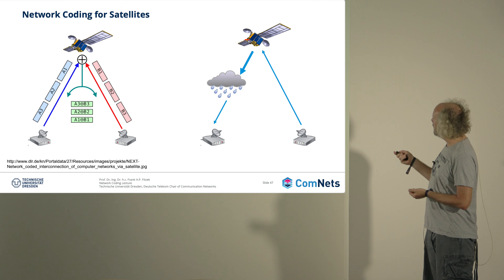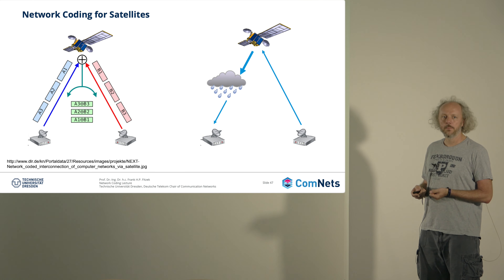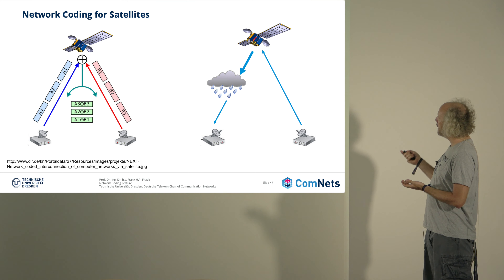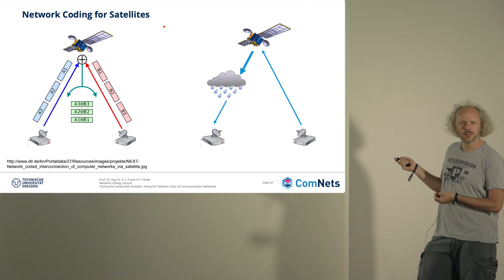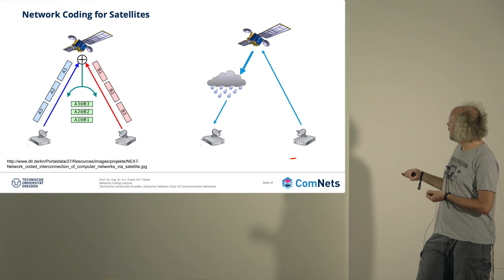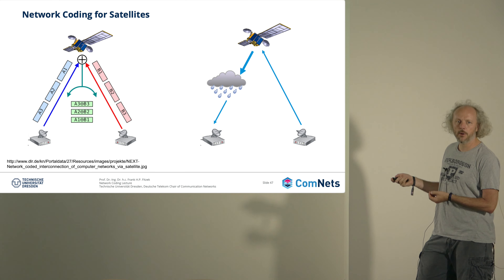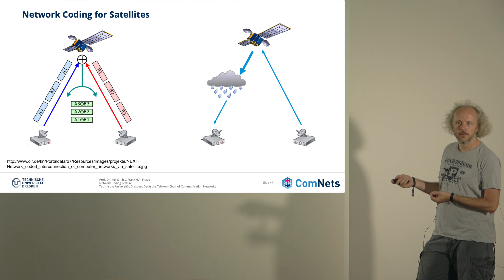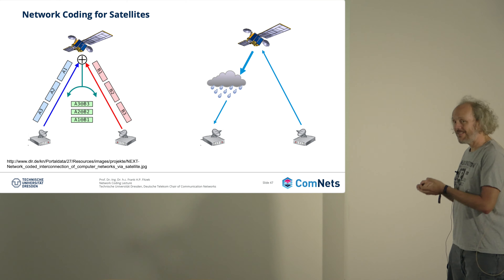The most interesting implementation is this one: you are sending data from here to here and down here — so you have an encoder, a decoder, and a recoder at the satellite. Do you understand where the benefit is for a satellite operator when you have a recoder here? You could do an encoder here and a decoder here and transparently replay it here.